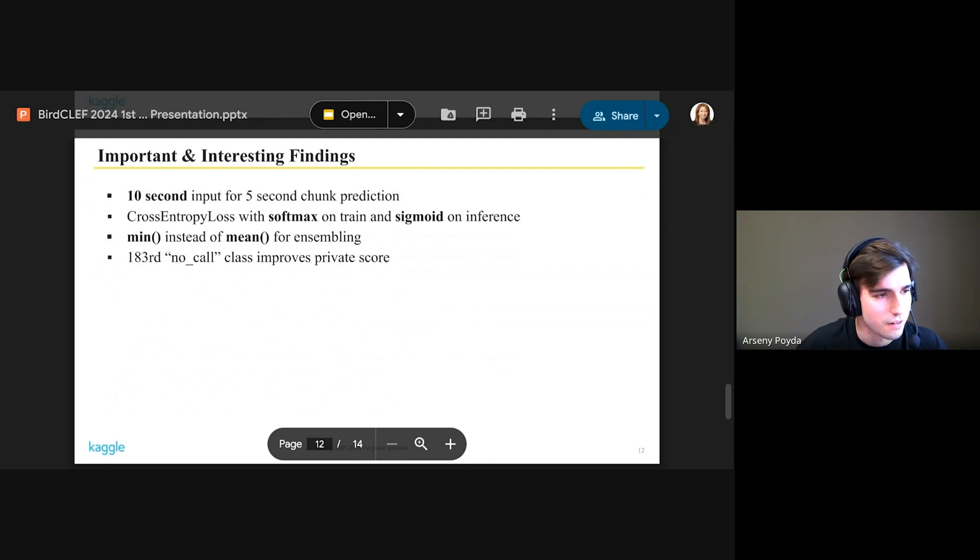Some important and interesting findings. First, that we use 10 seconds instead of 5 seconds to predict 5-second chunks. Second, cross-entropy loss with softmax on training is really nice for inference if we replace the softmax with sigmoid function.